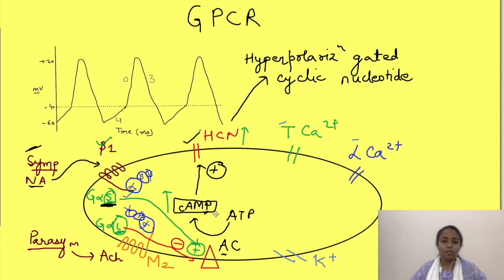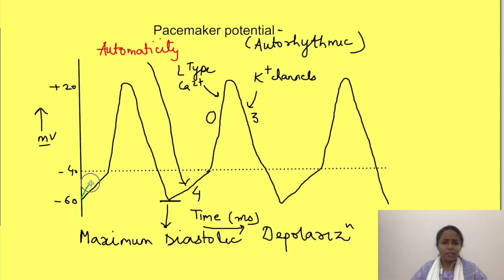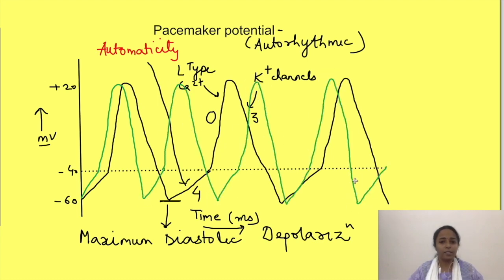So in short, sympathetic activation leads to more opening of HCN channels causing more entry of sodium inside the cells leading to faster change in the potential towards threshold. That means there is a change in this slope of the prepotential which becomes steeper, and due to this SA node generates more number of impulses in the same time, hence it increases heart rate.